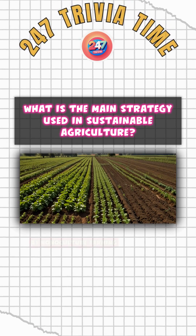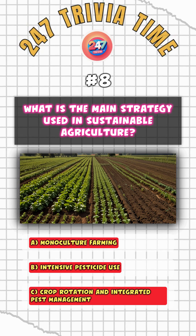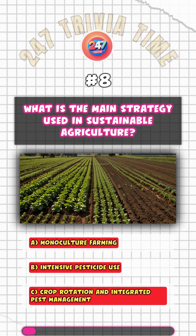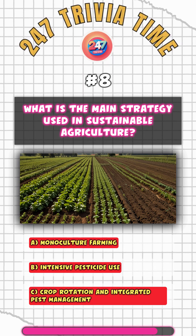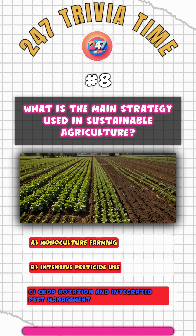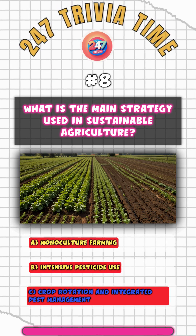What is the main strategy used in sustainable agriculture? C. Crop rotation and integrated pest management.